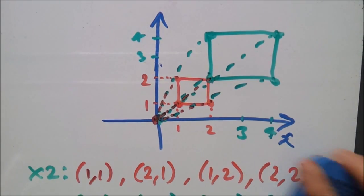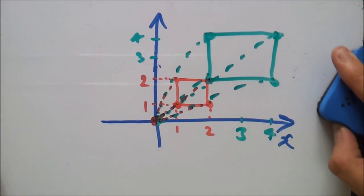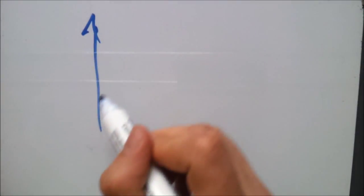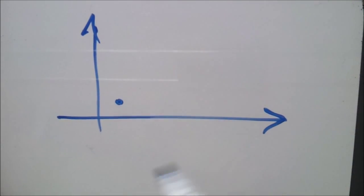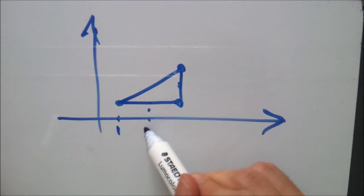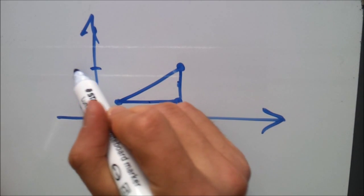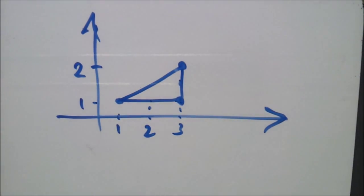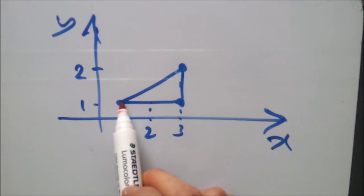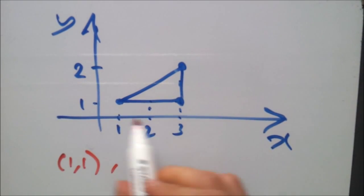Now let's do part two: a scale factor of a half. Let's clear the board and use a triangle this time. We have a triangle with corners going up to about one, two, three. Let's write down the corners — this one is (1,1), this one is (3,1), and the top-right corner is (3,2).